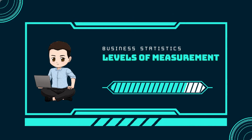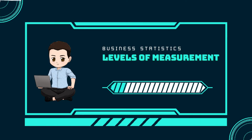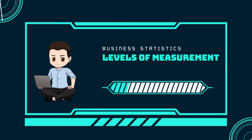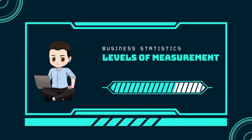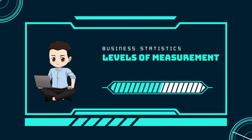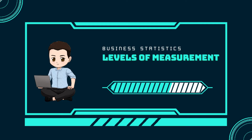Data measured using the nominal scale is qualitative or categorical. Categories, colors, names, labels, and favorite foods, along with yes or no responses, are examples of nominal level data. Nominal scale data are not ordered. For example, trying to classify people according to their favorite food does not make any sense — putting pizza first and sushi second is not meaningful.